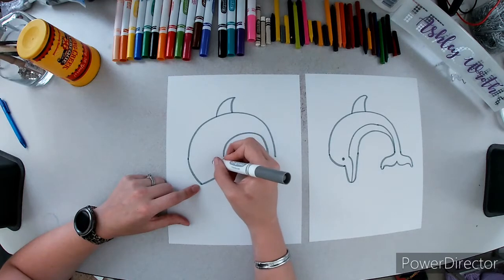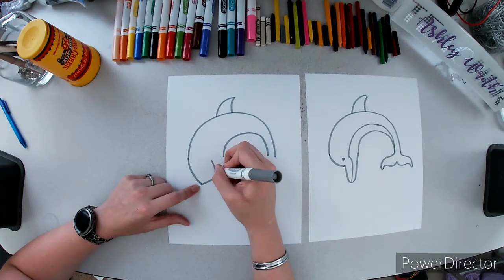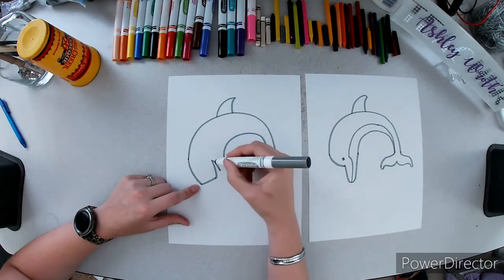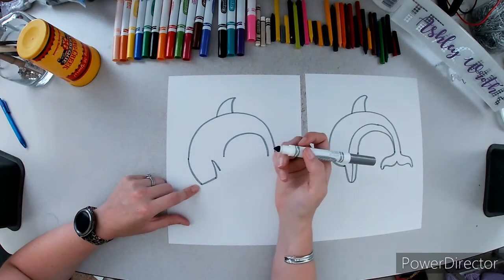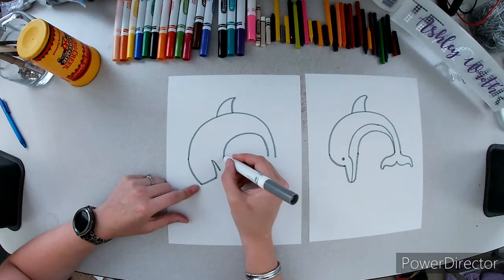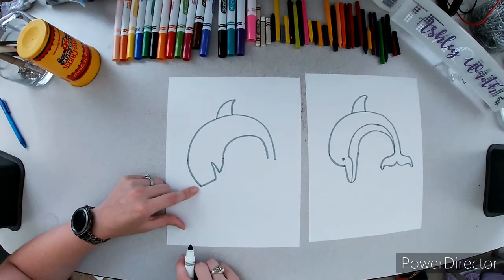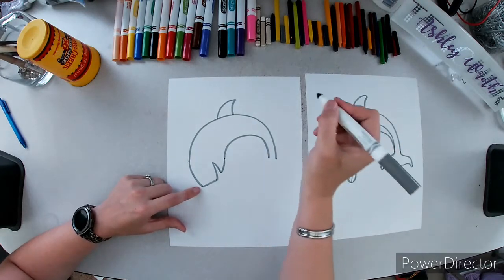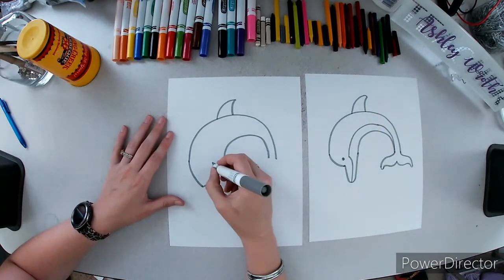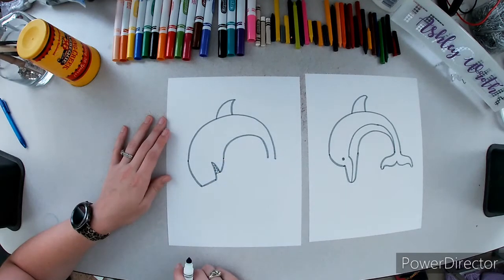Now I'm going to do a smile. And this side is shorter than this one. Then I'm going to connect these with a curve. And if you want to put pointy teeth in your shark's mouth, you just do a zigzag line. Just like that.